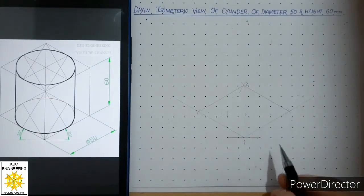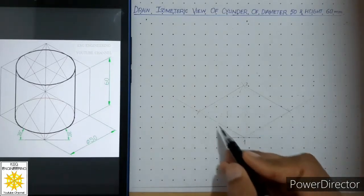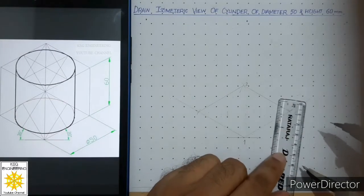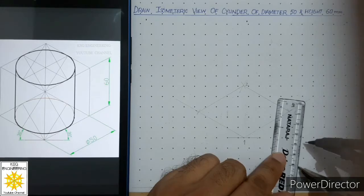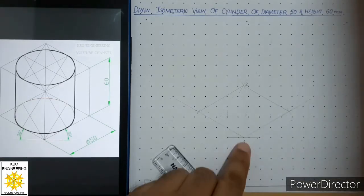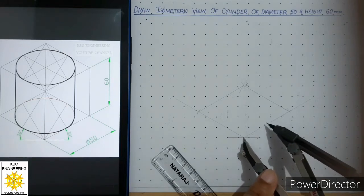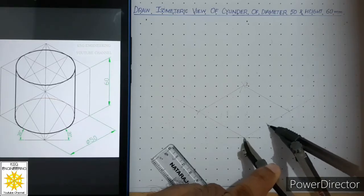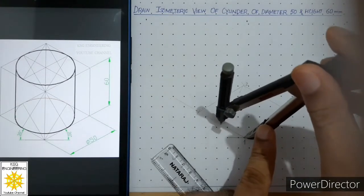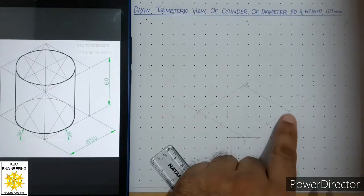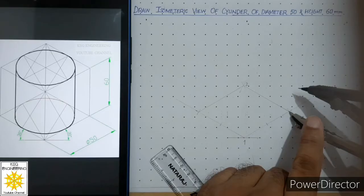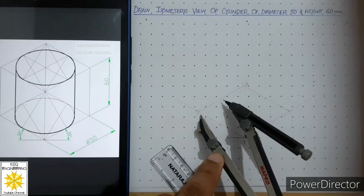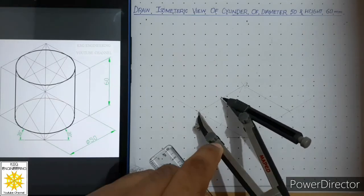Then we will locate the midpoints of these four sides. Since the length of each side is 50mm, we open the compass to 25 millimeters. Place your compass at this point and cut both sides to 25mm, then place your compass at this intersection and cut this length to 25mm to mark the midpoint of each side.